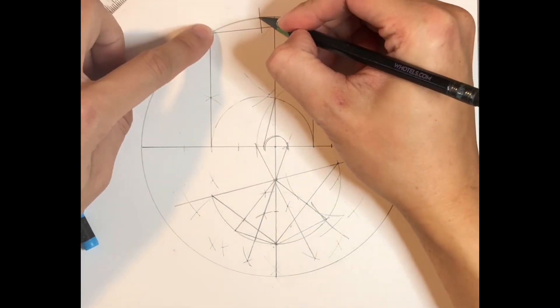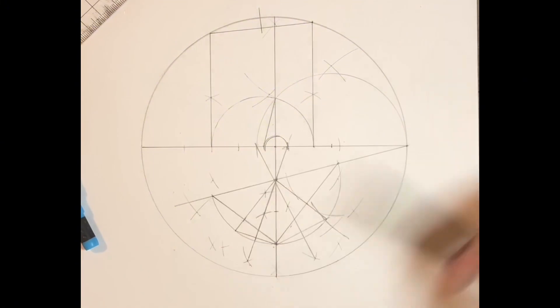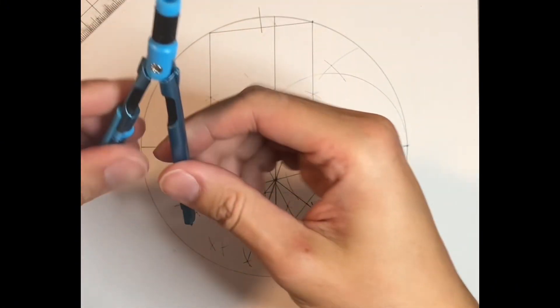So now this point and this point, and this point and this point, they are one-seventeenth of the circle. So all we need to do is just complete the other points.